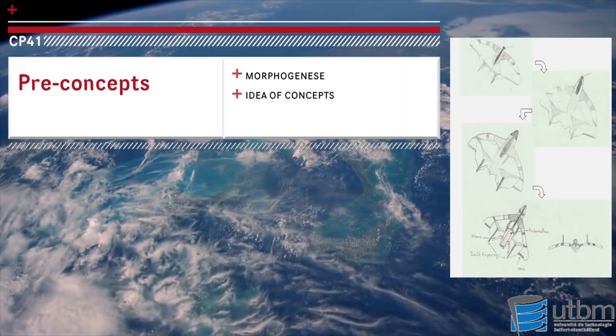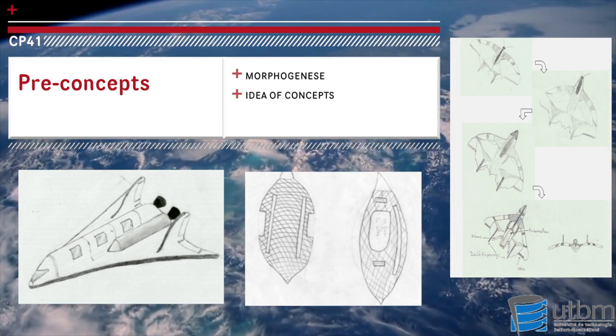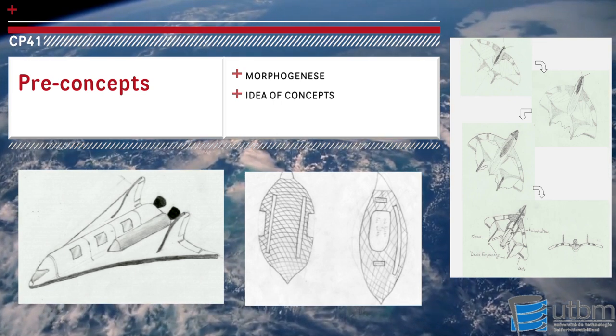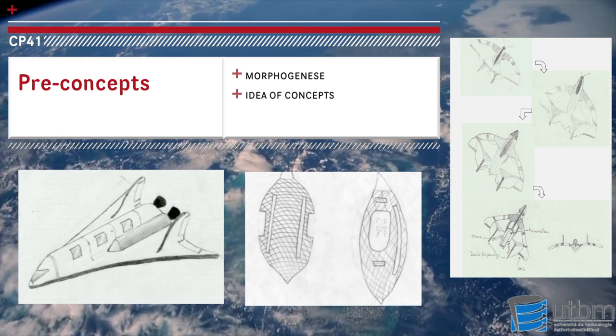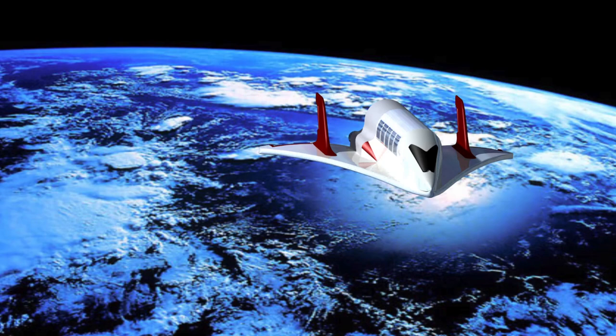In our design process we used methods like morphogenesis. We generated many ideas of concepts for our wings and also our structure. Now that the preconception step is finished, we can choose some solutions to build our final design.